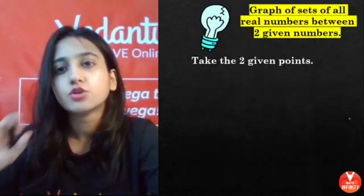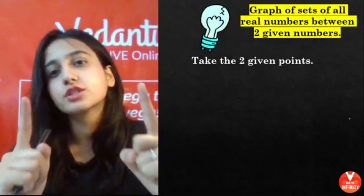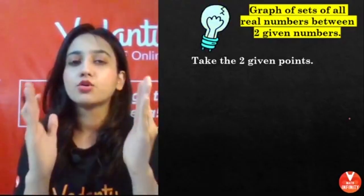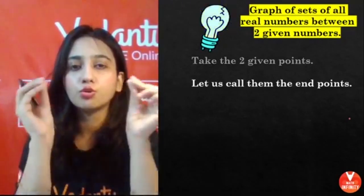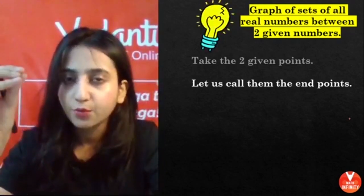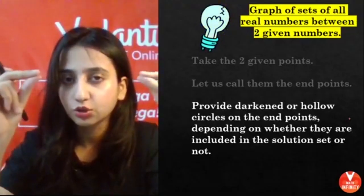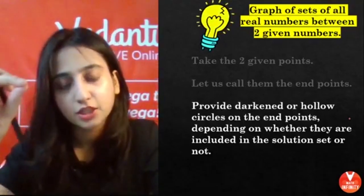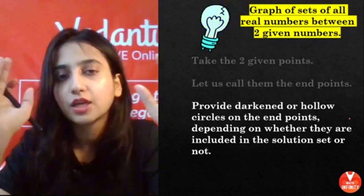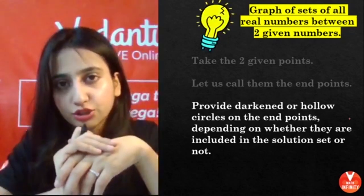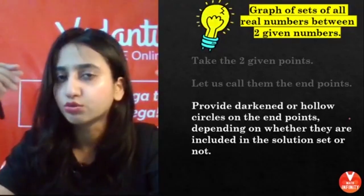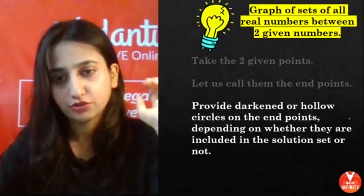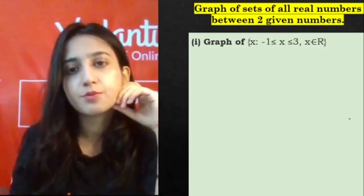This is an easy method of how we represent the solution sets on the number line. Now let's study if I have two points given and I have to plot numbers between them, represent them, how will we do it? Now what will you do? You'll take two points, then what will you check? You'll call those two points end points. Now you have to see whether you darken those end points or not. If you darken the end points, it means the number at those end points is included in your set, in your solution set. If you make those end points hollow, it means they are not included in your solution set.